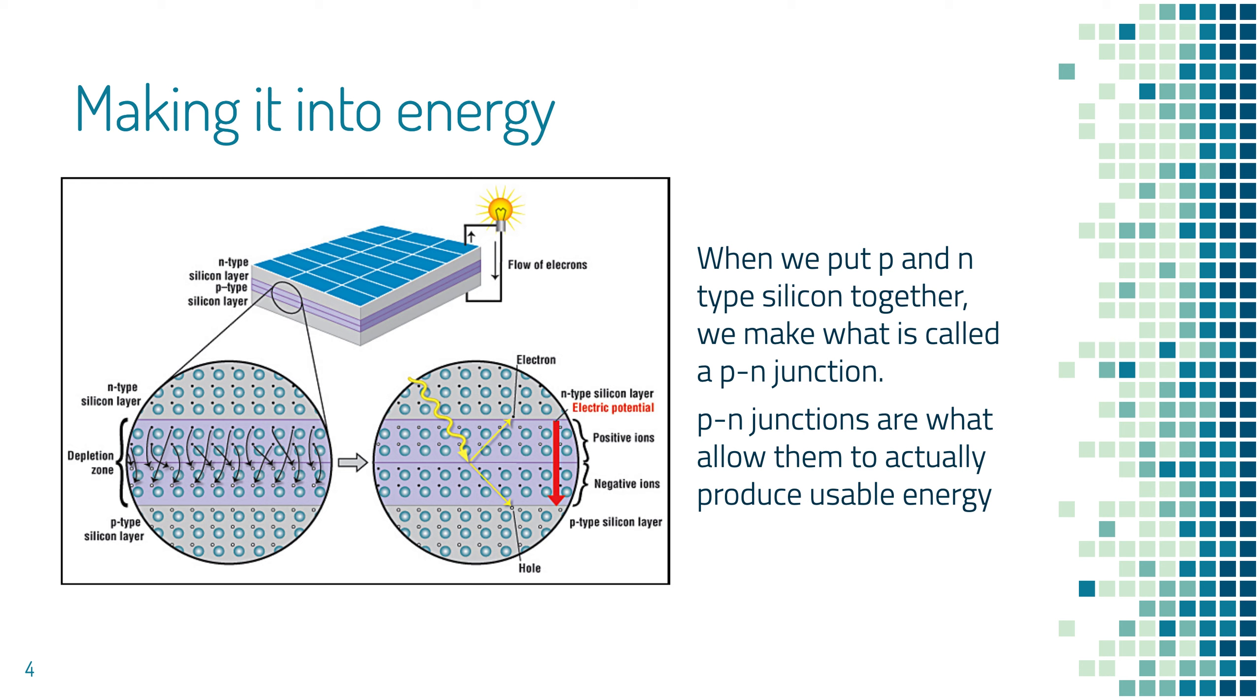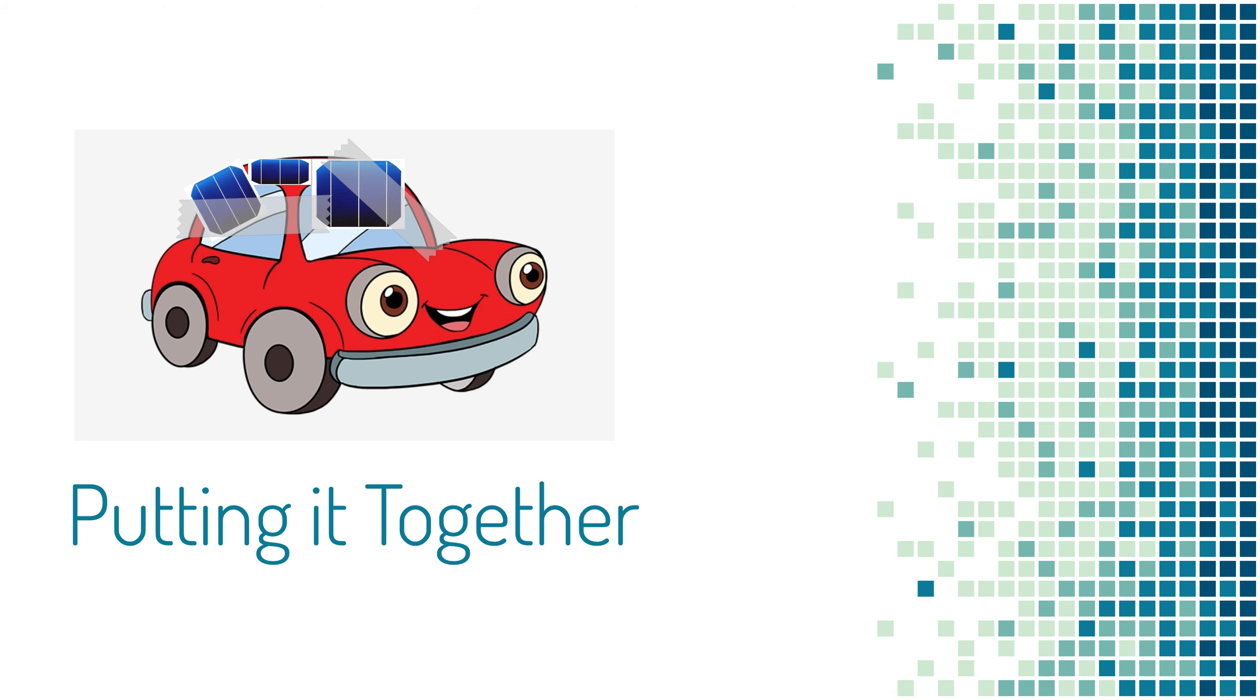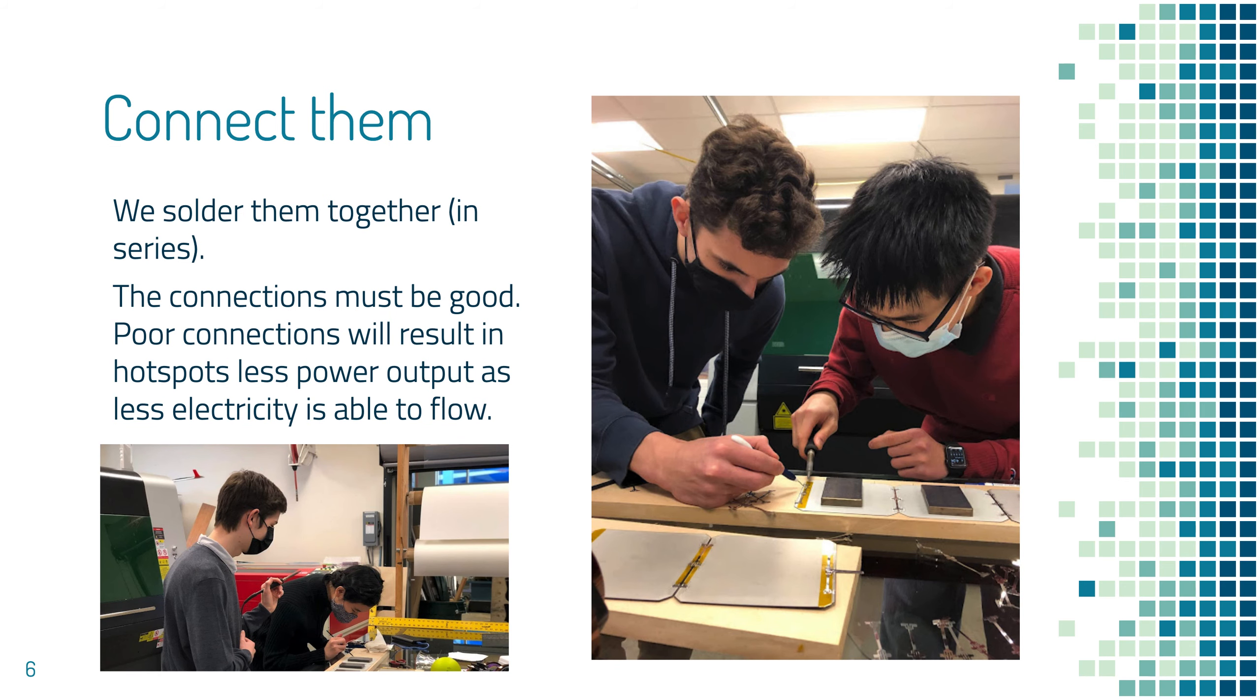That's the basic gist. There's more complicated physics and math involved. So now we're getting into our process and putting it together. First off, we get a bunch of solar cells. We use Maxeon SunPower solar cells, and we just get the raw cells. So then we have to put them together. We solder them together, and most of ours are in series. These connections have to be good because, as with any other circuit, you want it to be closed so that electricity can flow. It's a long process. There's about six connections per cell, and when you're doing hundreds, it takes a while.